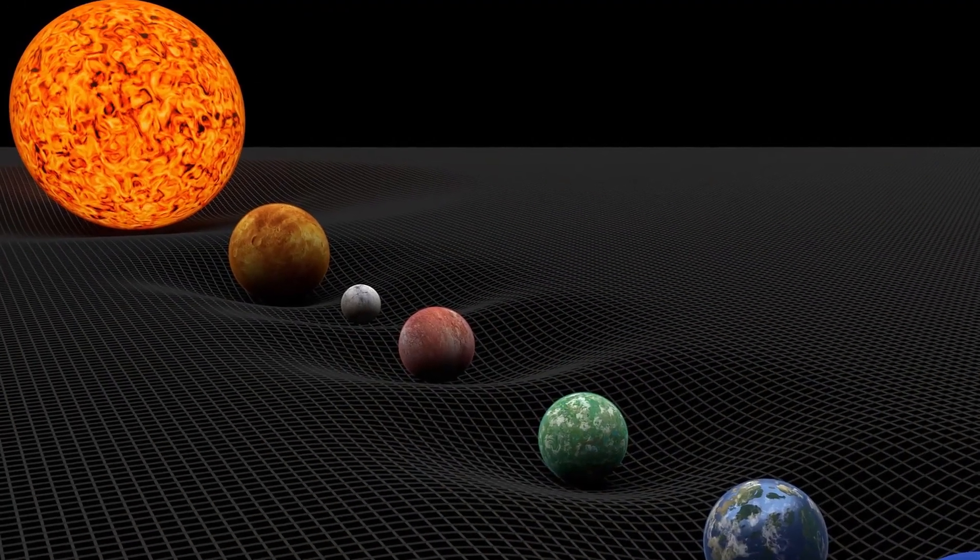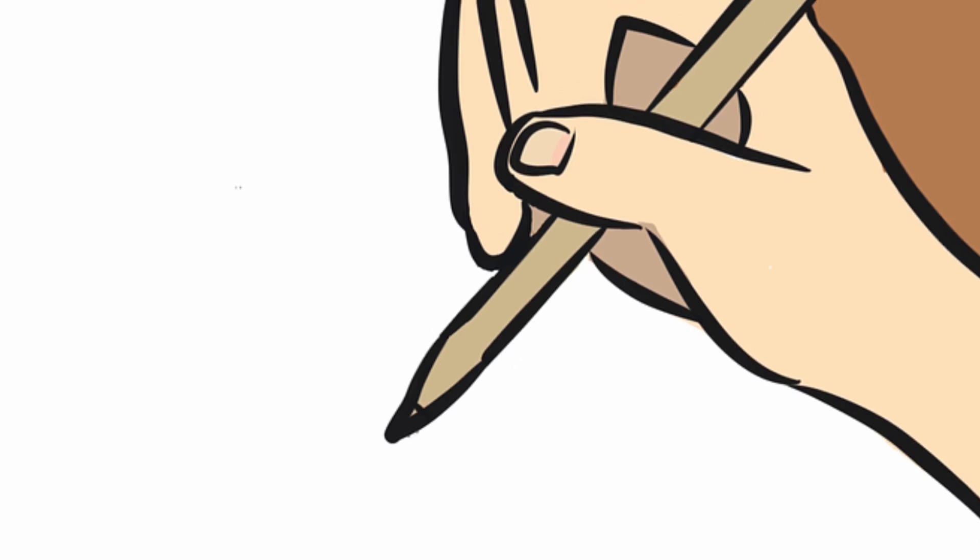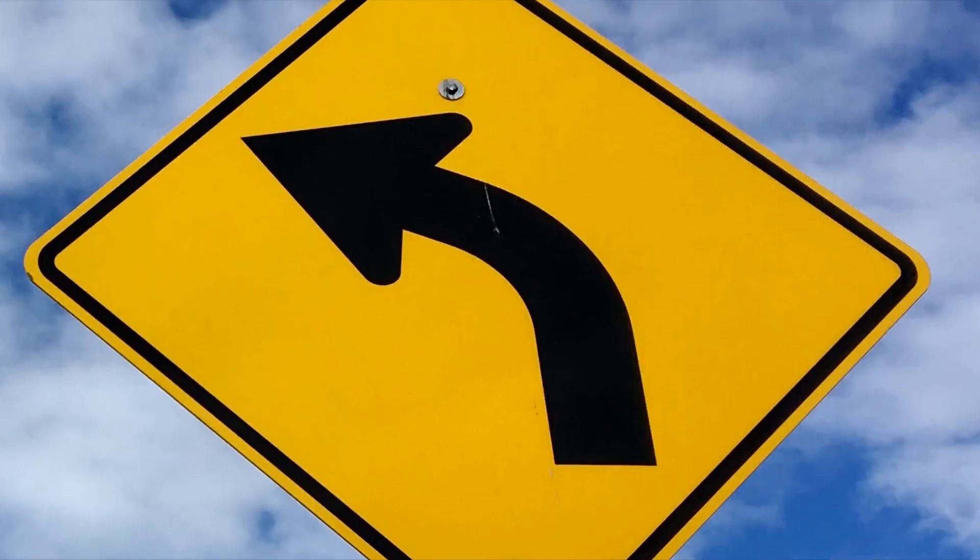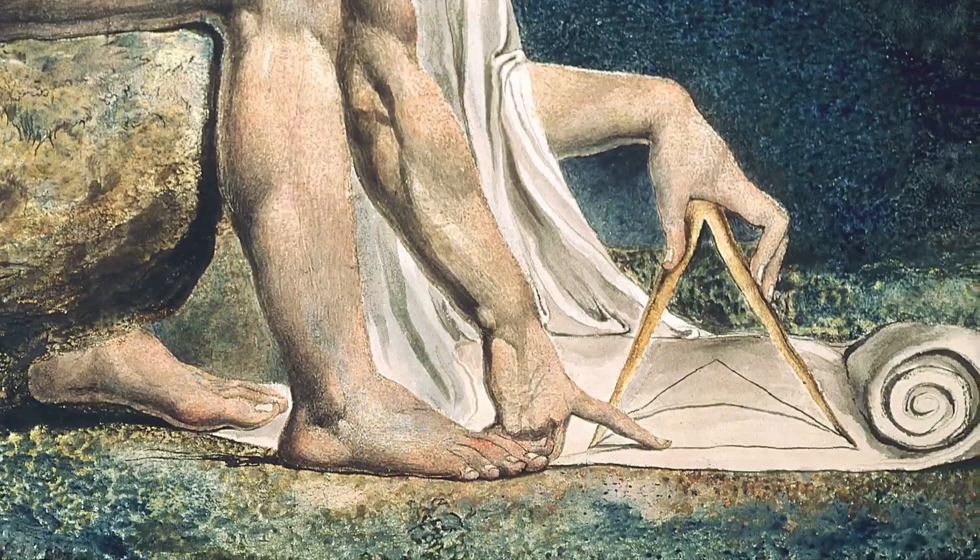Light itself isn't being bent. Gravity bends the space through which light travels. Imagine drawing a straight line on a sheet of paper and then bending the paper. The line only appears curved because its canvas deformed.